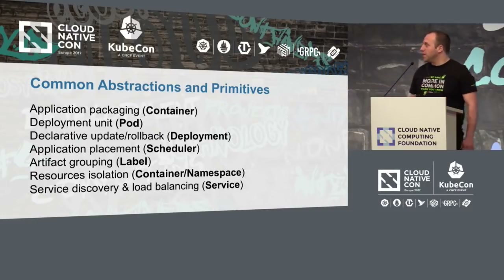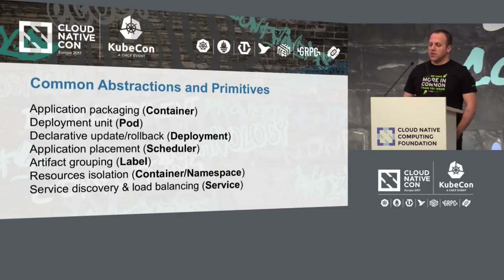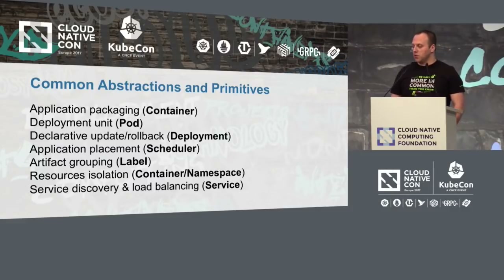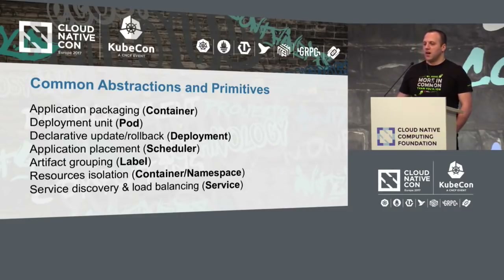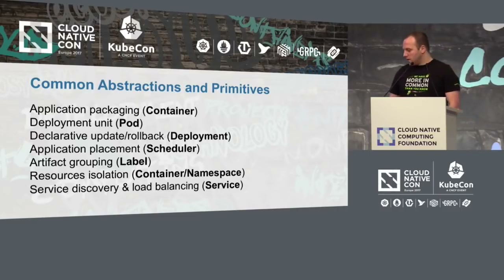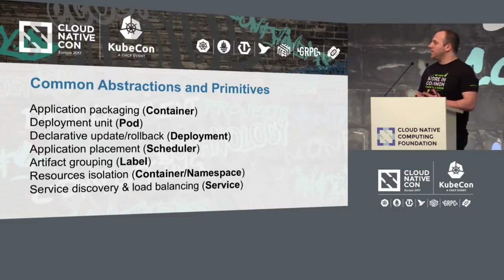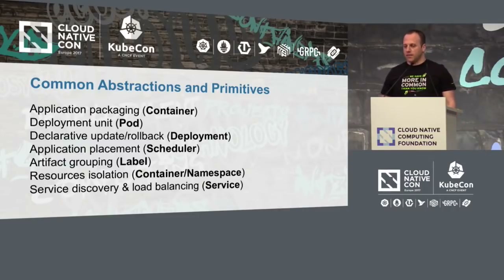The interesting part is that these cloud native platforms nowadays offer a common set of abstractions and primitives for developers to design, develop, and deploy their applications. For example, the concept of a deployment unit — which is a Pod in Kubernetes — now exists in Apache Mesos and in Amazon ECS, under different names, but still offering the same features.